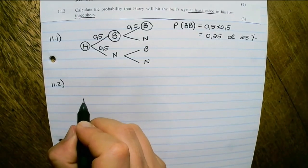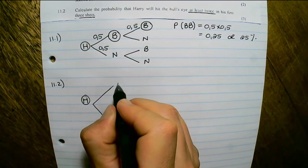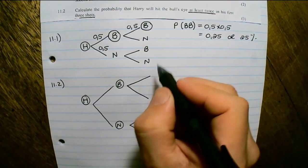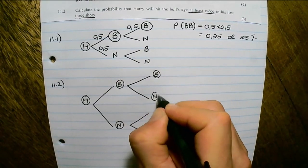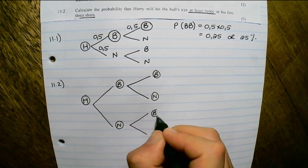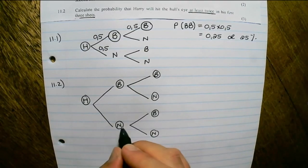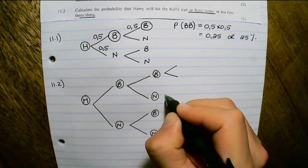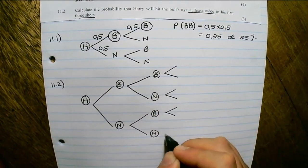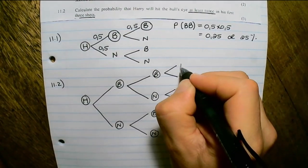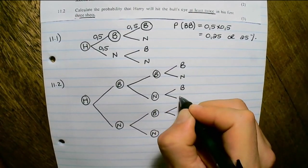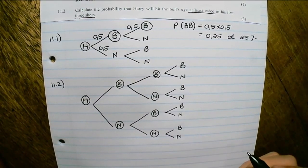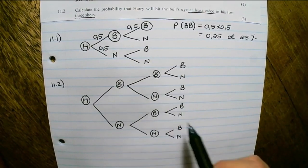Let's draw a tree diagram again. In our first shot it will be bull's eye or not. Then in our second shot it will be bull's eye or not — and also bull's eye or not if he didn't hit the bull's eye in the first round. Then we include the third shot as well: bull's eye or not, for each branch.